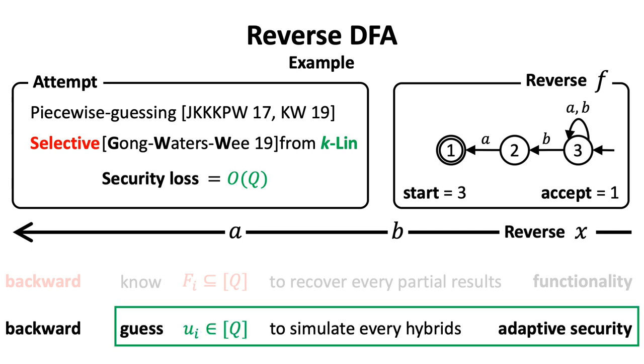Then, we indeed get the property we need for the security proof. That is, we only need to guess a single state in the hybrid. At the same time, for the functionality, we use the forward computation of reversed DFA.